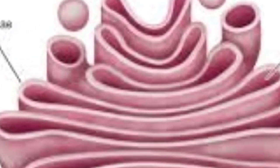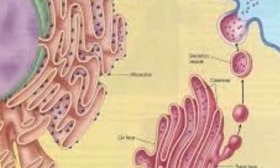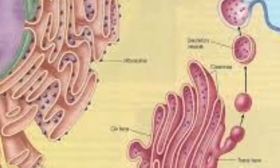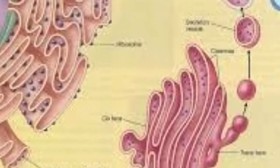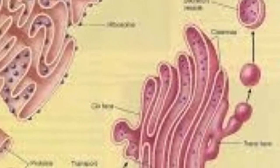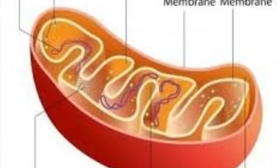One of the most important cell organelles in the animal cell is the Golgi complex, discovered by Camillo Golgi in 1898. Golgi complex functions include synthesis, modification, and secretion of cell products.